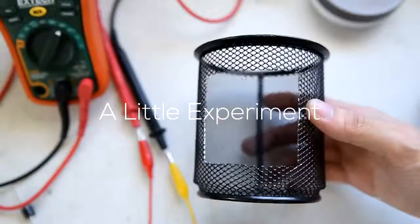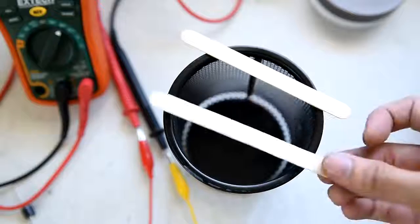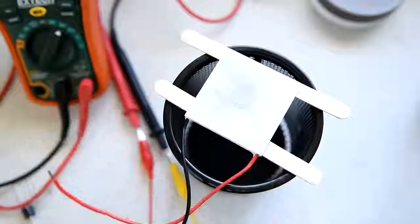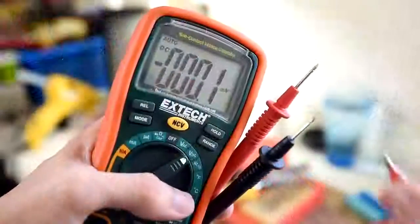Now, what's cool about the peltier is that it can convert thermal heat directly to electricity. But first, let's do a little experiment to demonstrate how a peltier works. Place two popsicle sticks on top of your pen holder's mouth, then put the peltier right above it. Now, let's see how much power this thing produces.